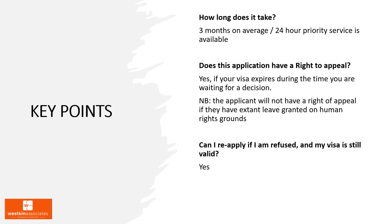The process typically takes around three months to be decided, but we can also help you obtain a priority service which gets your decision within 24 hours. As this application is related to your private life in the UK, you'll have the right to appeal if your application is refused whilst your visa has expired. If your visa has not yet expired when the decision is made, you can simply reapply.